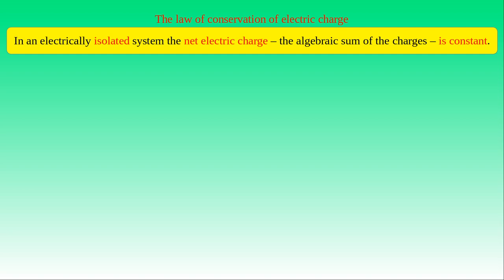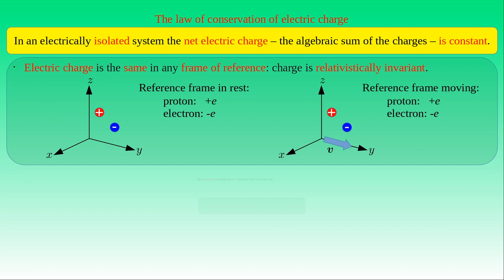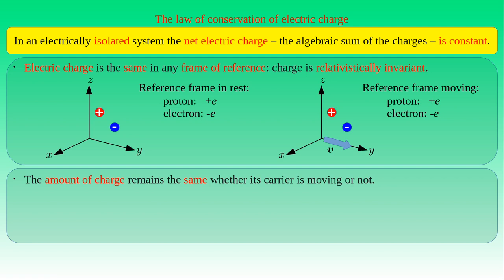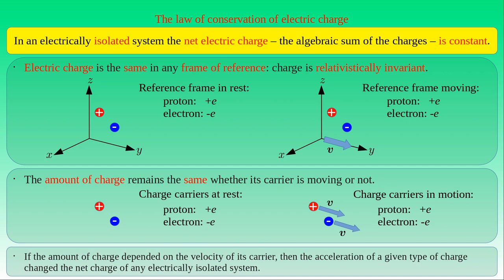All these phenomena verify the law of conservation of electric charge, which states that the net charge — that is, the algebraic sum of the charges — is constant in any electrically isolated system. We also note that electric charge is relativistically invariant: the amount of charge is the same in any frame of reference, whether the frame is at rest or in motion. Therefore, the amount of electric charge remains the same whether its carrier is moving or not, and it does not depend on the velocity of its carrier. Given positive or negative charge carriers at rest will still have the same charge when they are in motion. If the amount of charge depended on the velocity of its carrier, we could change the net charge in an electrically isolated system simply by accelerating a given type of charge in the system.